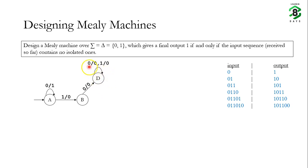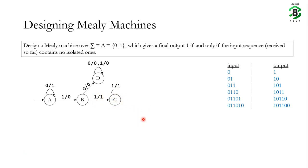State D can be thought of as a dead state. In state D, irrespective of whether we receive input 0 or 1, we will always produce output 0, because the input sequence already contains an isolated 1. But in state B, if we receive a 1, that means it is not an isolated 1 — we have received two consecutive 1s — so we produce output 1 and go to state C. As long as we receive 1 in state C, we continue to produce output 1 and remain in state C, since there are no isolated ones.